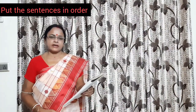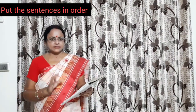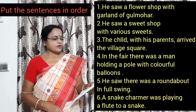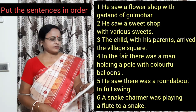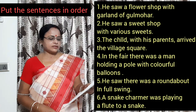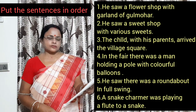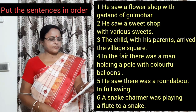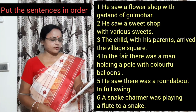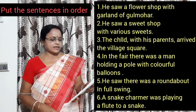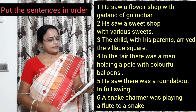Children, hope you have understood the story. Now, here is a task for you. There are some sentences in disordered manner — you have to put them in order and write them. The sentences are: He saw a flower shop with a garland of Gulmohar. He saw a sweet shop with various sweets. The child with his parents arrived at the village square. In the fair, there was a man holding a pole with colorful balloons. He saw there was a roundabout in full swing. A snake charmer was playing a flute to a snake.